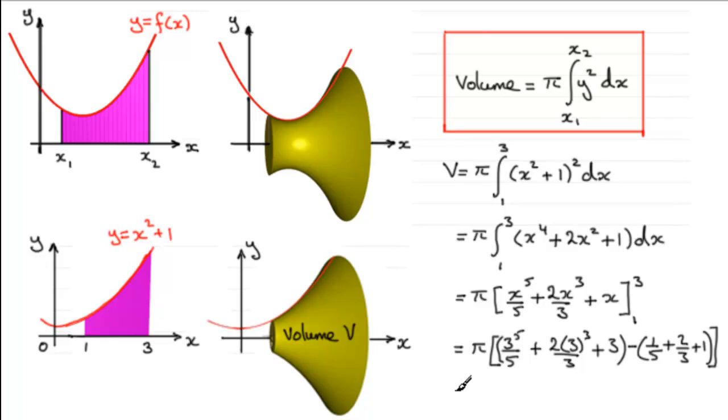Now if you use your calculator to work this out, in terms of pi, what you get is 1016 over 15 pi. And because it's a volume, I like to write units cubed. Not that you necessarily have to write that. I doubt whether you're going to lose any marks in an exam. But as I say, being a volume, I would always do something like that.